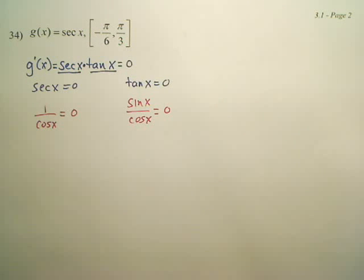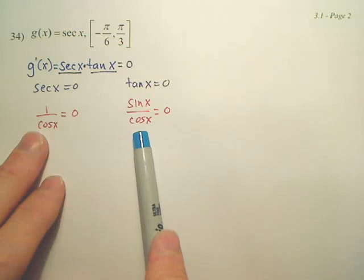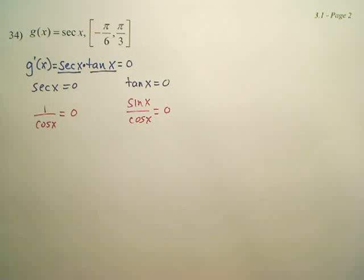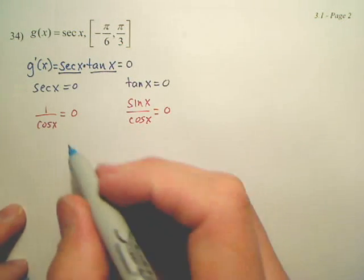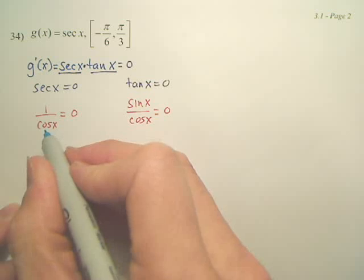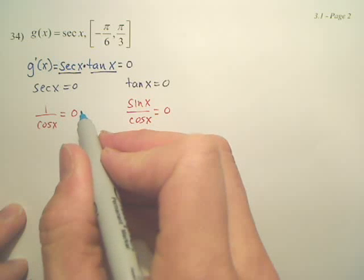By the way, critical numbers are where the derivative equals zero, as well as where it does not exist. So, do we care about the denominators? Yes — because it's where it equals zero or it does not exist. So we want to set the denominator 1 equal to zero, which makes no sense.